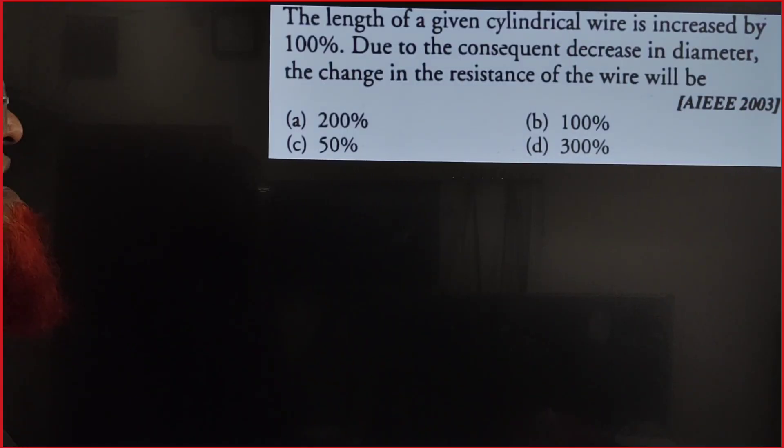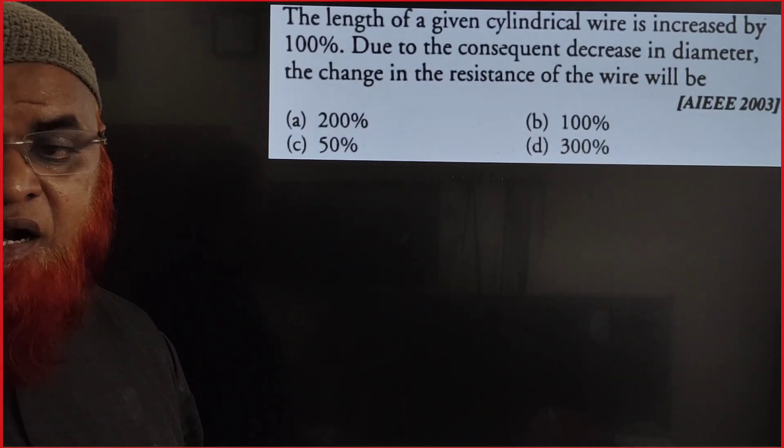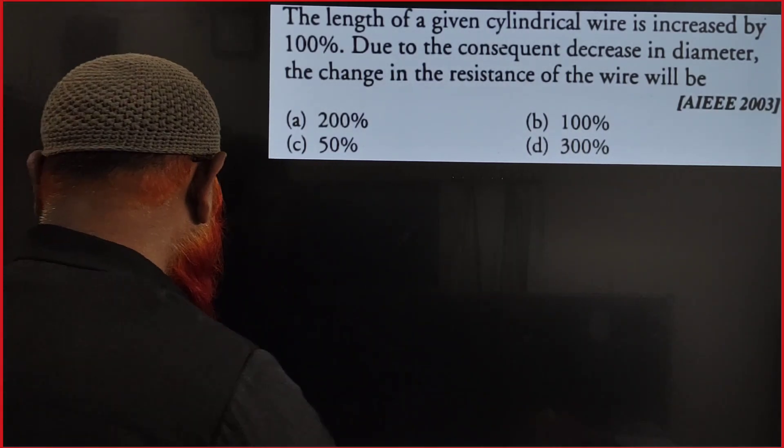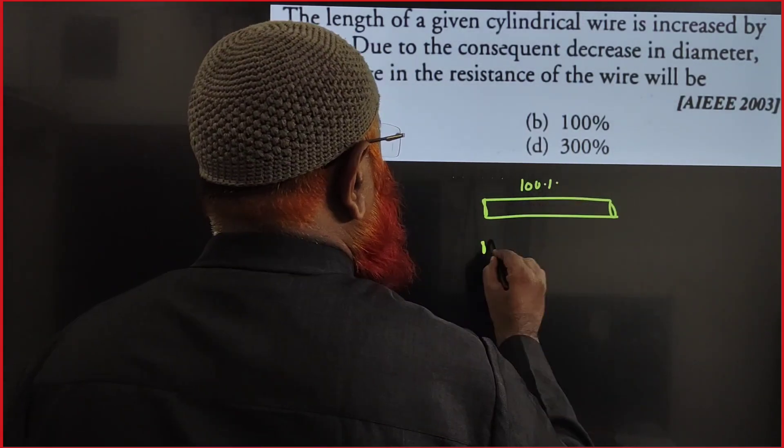Now, the length of a cylinder is increased by 100%. Due to consequent decrease in the diameter, means what is the meaning here? When length increases, diameter decreases, means stretching case. This also indirectly, this is also a stretching case. What is the meaning of this stretching case here? Previously it was 100%, now how much is it?